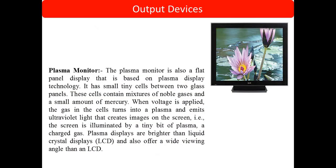The next monitor type is the plasma monitor, which is also a flat panel display based on plasma display technology. It has small tiny cells between two glass panels. These cells contain a mixture of noble gases and a small amount of mercury. When voltage is applied, the gas in the cells turns into plasma and emits ultraviolet light, which carries the image on the screen — the screen is illuminated by tiny bits of plasma.